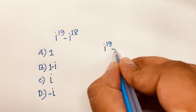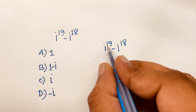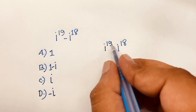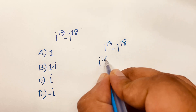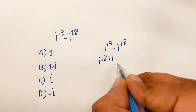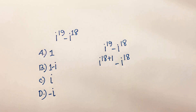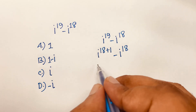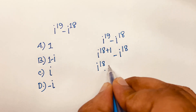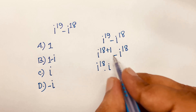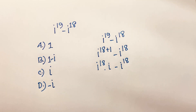So i to the power 19 and i to the power 18 — I can say i to the power 19 will be i to the power 18 plus 1, minus i to the power 18. That gives us i to the power 18 times i to the power 1, minus i to the power 18.